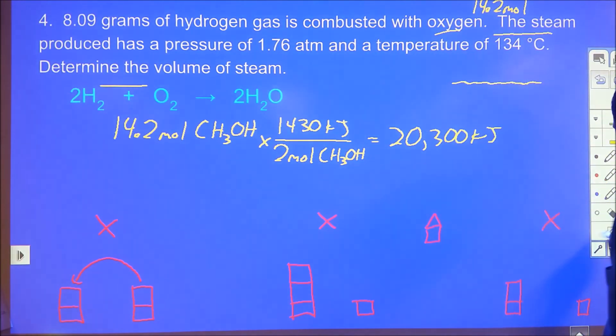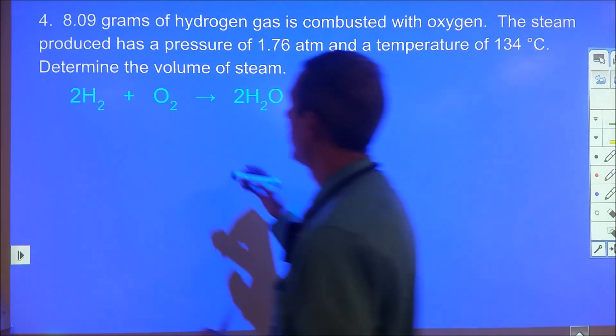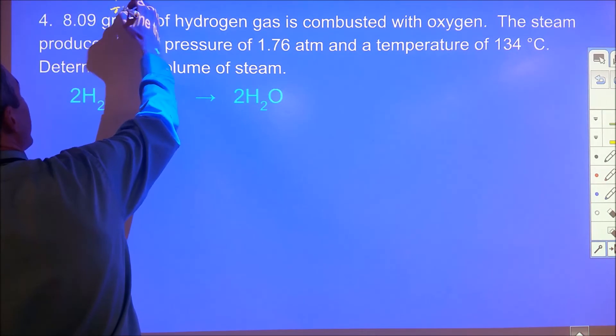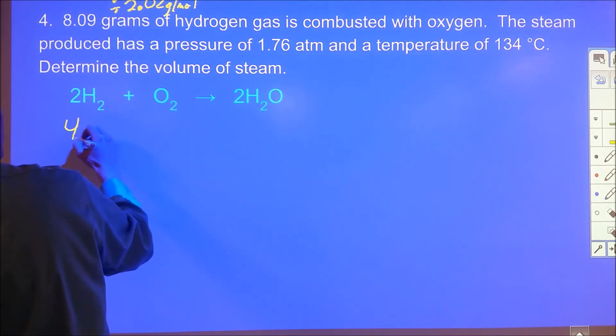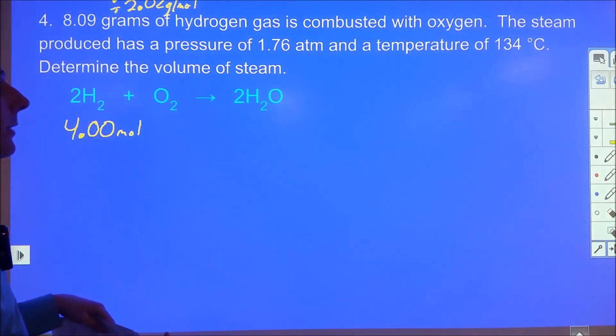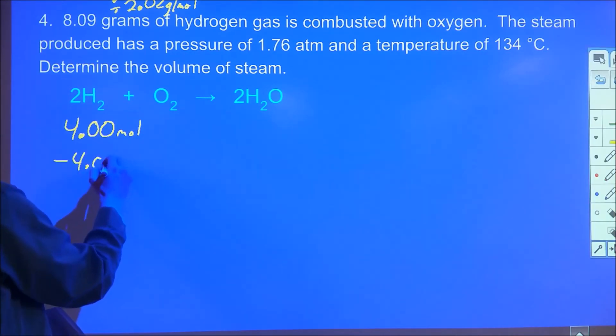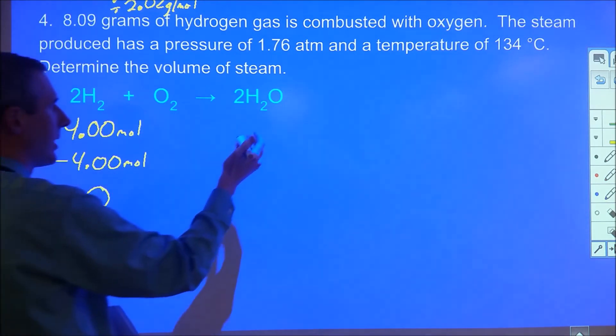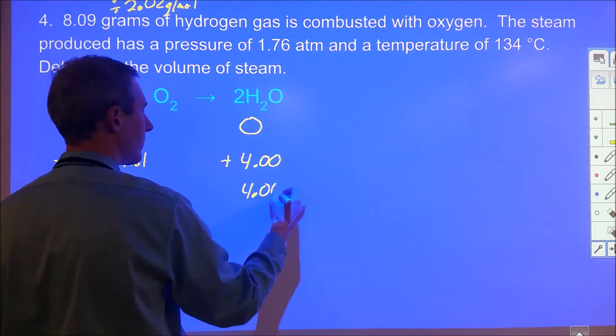The last one does some ideal gas law analysis. We have 8.09 grams of hydrogen gas divided by 2.02 grams per mole, which is 4.00 moles of hydrogen. If we burn all of that with oxygen, how much steam would be produced and what would the volume be? From our BCA chart, we know all of this will react and we'll form four moles of steam.